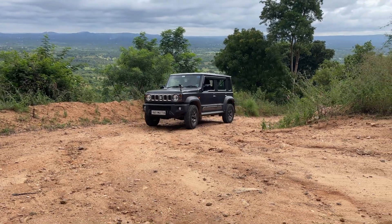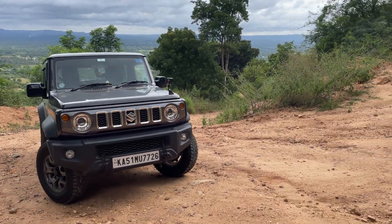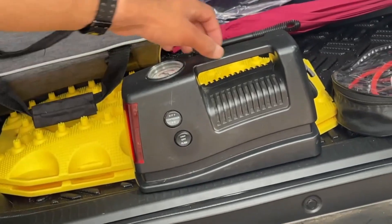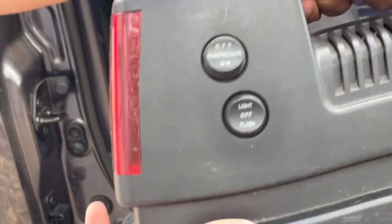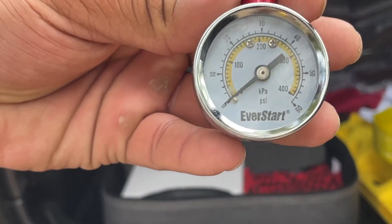Bonus tip number 2: low pressure equals low speed; high pressure equals high speed. Here are some recommended speeds with low pressure in tires. 16 PSI or below — try not to exceed 30 kilometers per hour. 18 to 25 PSI — try not to exceed 50 kilometers per hour. 25 to 30 PSI — try not to exceed 80 kilometers per hour. It is a good idea to keep a compact air compressor and a tire gauge handy in the car to check tire pressures, especially during off-roading or while going on long drives.